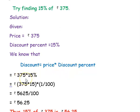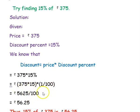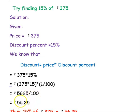The price is 375 and the discount percent is 15 percent, written as 15 into 1 divided by 100. So 375 into 15 divided by 100: 375 multiplied by 15 is 5625, divided by 100 gives rupees 56.25. Thus 15 percent of rupees 375 is rupees 56.25.